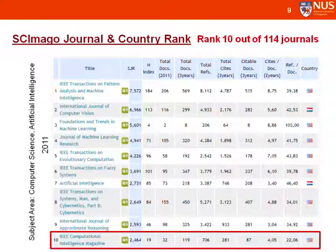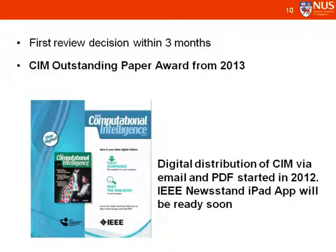Looking at another ranking — the SCImago journal and country ranking based on 2011 impact factor — the magazine is ranked 10 out of 114 journals. Another good reason to submit your article is that a review decision is always guaranteed within 3 months. Very often you will receive the first review decision within about 10 weeks, with 8 weeks for the review time and 2 weeks to make the recommendations.